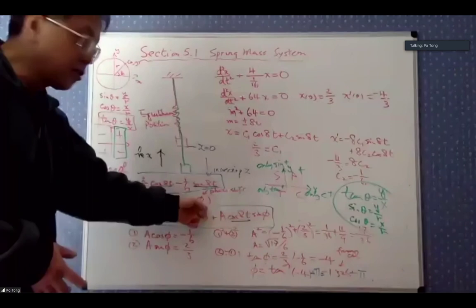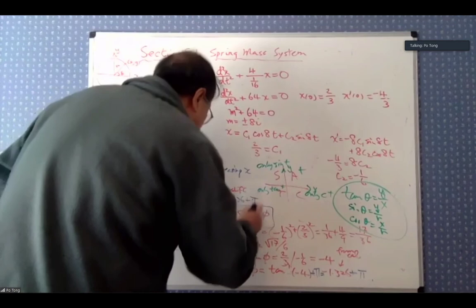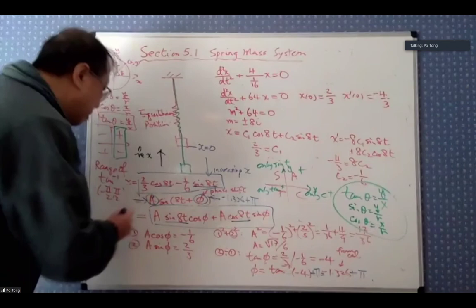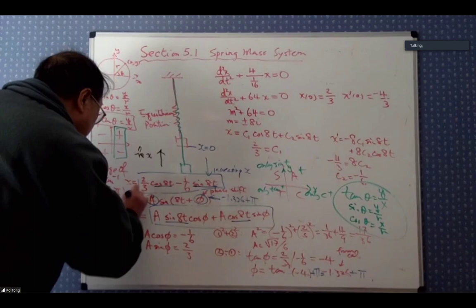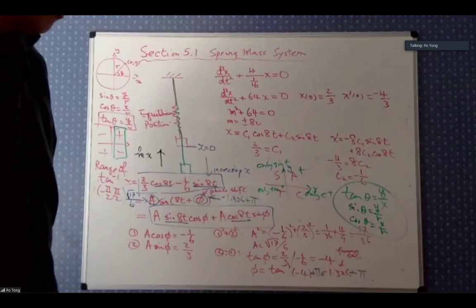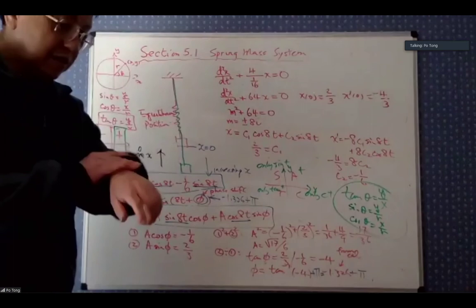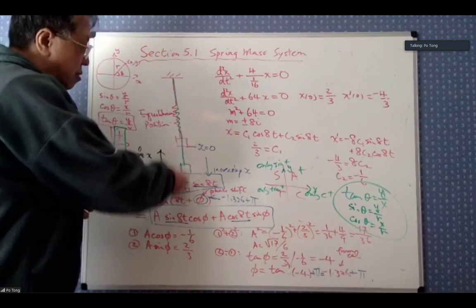You end up with a simple harmonic motion with a certain amplitude A = √17/6 and phase shift φ = −1.326 + π. Next time we'll do cases where you have damping — you can think of submerging the spring in liquid, which gives resistance. We're running out of time today so we'll continue next class.